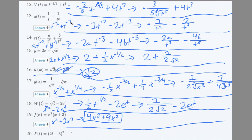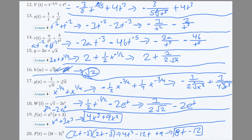Number 20: F(t) = (2t − 3)². Expand: (2t − 3)(2t − 3) = 4t² − 12t + 9. Derivative: 8t − 12.